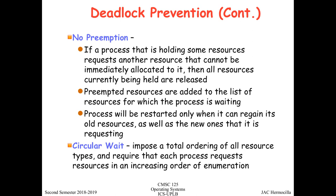The preempted resources — disk and screen — are added to the waiting list for the process that released them. When all three resources become available at the same time, the text editor process is restarted and given the previously released resources along with the new one, the printer. That is essentially how to violate no preemption.